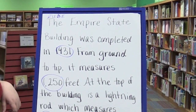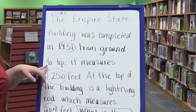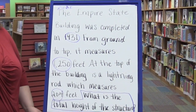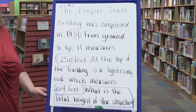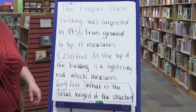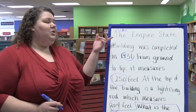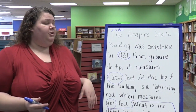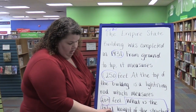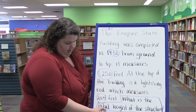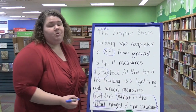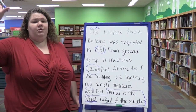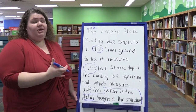The Empire State Building was completed in 1931. From ground to tip it measures 1250 feet. At the top of the building is a lightning rod which measures 204 feet. What is the total height of the structure? The U step is the most challenging because kids have to have some knowledge of operational vocabulary. I know the word 'total' means I need to add. This is almost always a separate lesson to teach kids operational vocabulary — teachers have frequently used word charts on their walls or a resource chart.